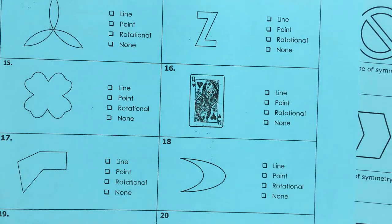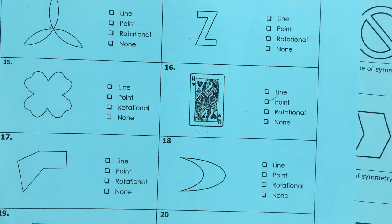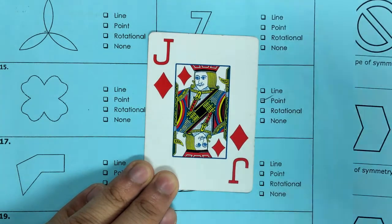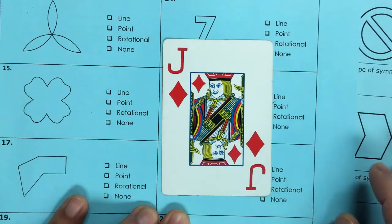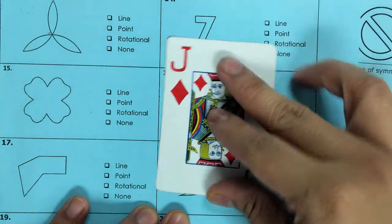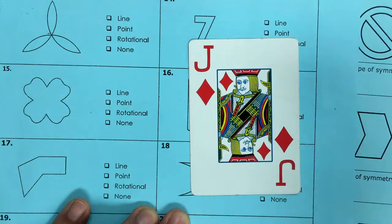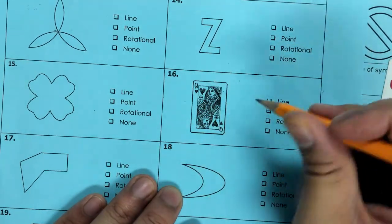What it does have is point symmetry. And playing cards - I'll use this jack as an example - playing cards are meant to be held upside down or can be held upside down. This is an example of something with a more complex design but still has point symmetry.